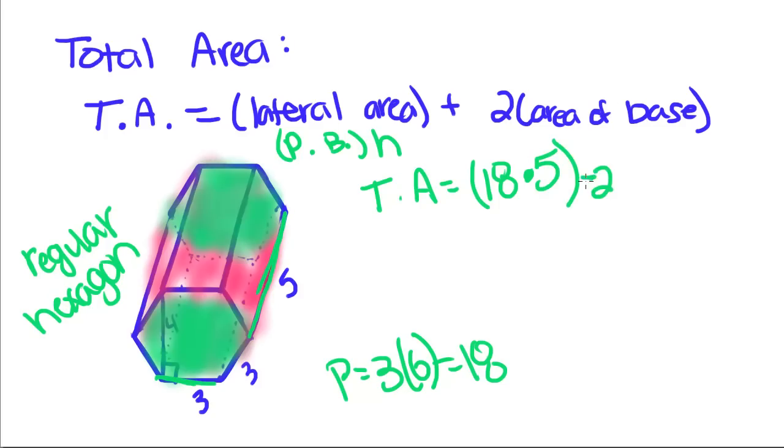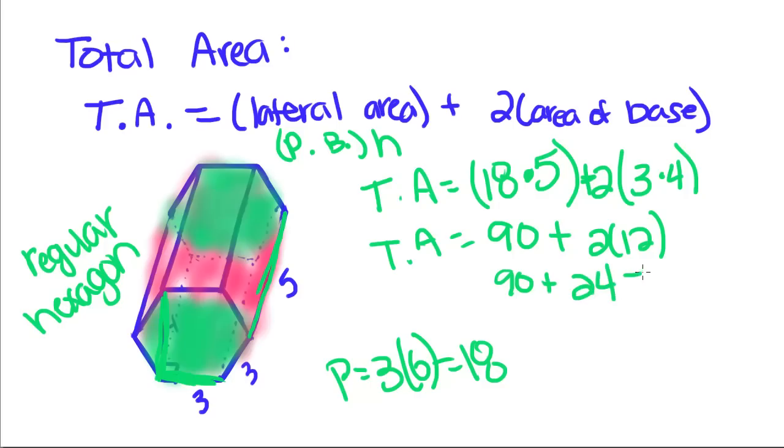Plus 2 area of the base. And an area of the base of the hexagon is length, length right here, times height. So this is 3 times 4. So 18 times 5, which is 90, plus 3 times 4, which is 12, 2 times 12. So 90 plus 2 times 12 is 24. So our total area for this prism is 114 units squared. Because remember, area is always units squared.